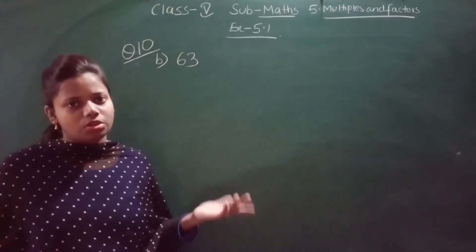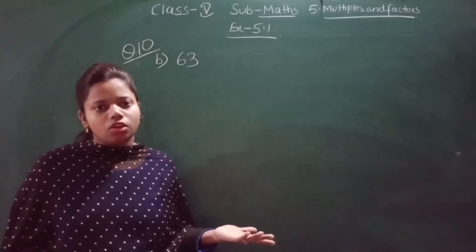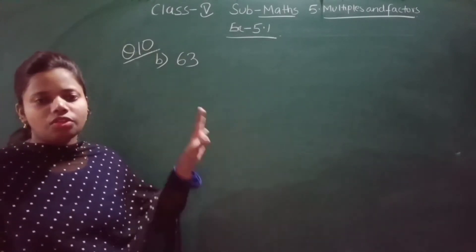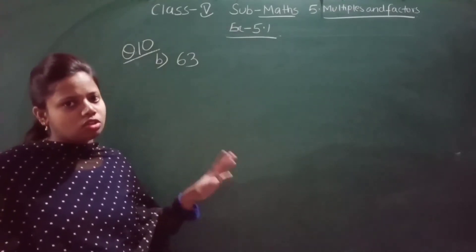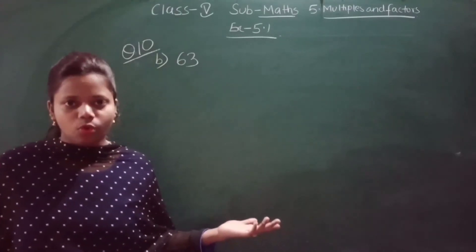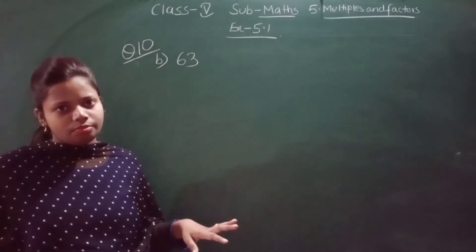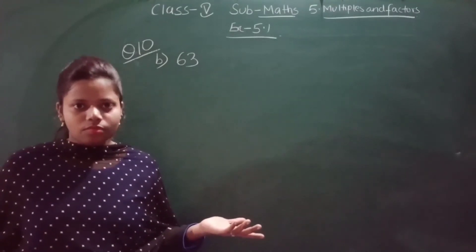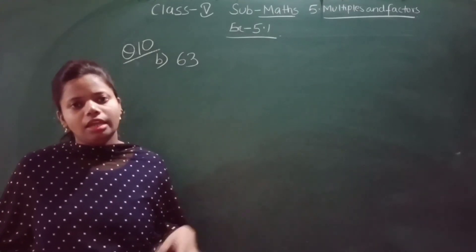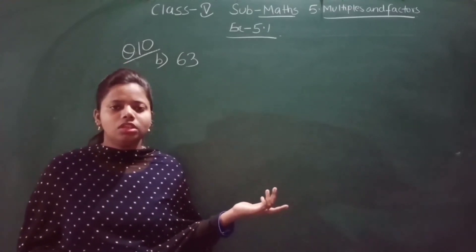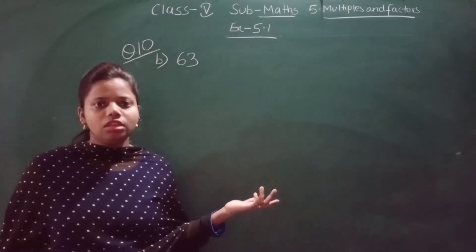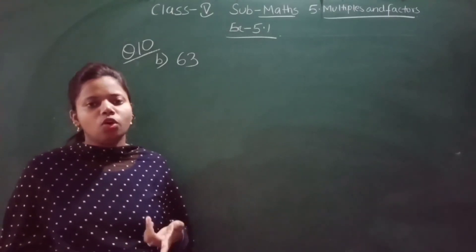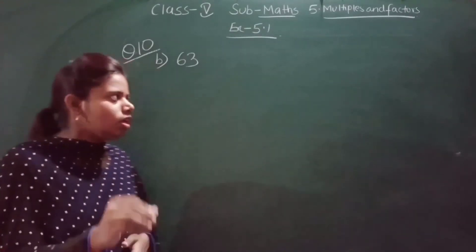I cannot take 5 because 5 is a prime number. If I take 6, it will not be co-prime because 6 comes in the 3 table, and 63 also comes in the 3 table — so 3 would be a common factor. If I take 9, it also cannot work because 9 is a factor of 63, and 3 is a factor of both 9 and 63. So we can take 10, which also forms a co-prime pair with 63. We can also take 4 or 8. I will use 10.